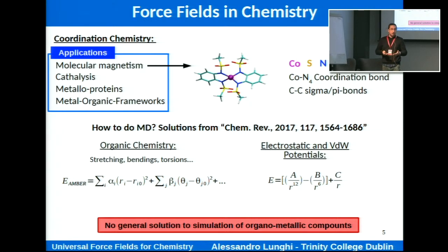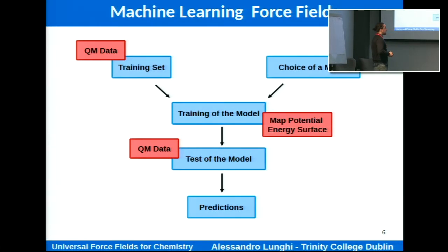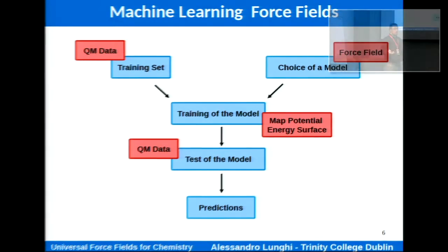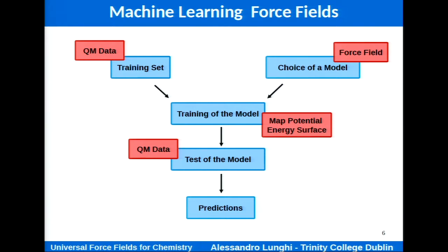We would like to have a model that can be generally applied to any chemical compound. The outline of our procedure is as follows: first you choose the force field you want to try, then you generate a training set — in our case done by DFT calculations — then you go to the training stage, where you teach the force field to reproduce the potential energy surface, and finally you compare your predictions with DFT reference calculations. If everything is okay, you go to predictions.